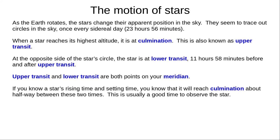As the Earth rotates, the stars change their apparent position in the sky, tracing out a circle in the sky once every sidereal day, which is 23 hours 56 minutes. When a star is highest in the sky at its highest altitude, it is at culmination, also known as upper transit. At the opposite side of the star's circle, at its lowest altitude, the star is at lower transit. This occurs half a sidereal day, or 11 hours 58 minutes, before and after upper transit. Upper and lower transit both occur at points on your meridian.